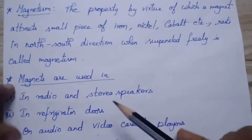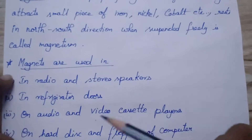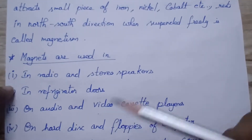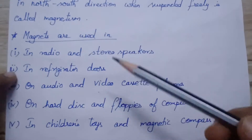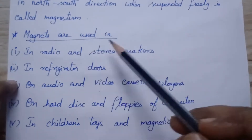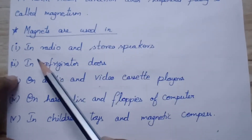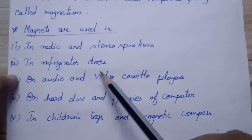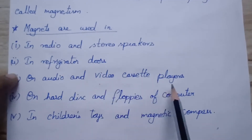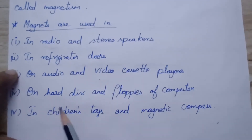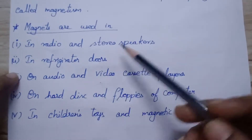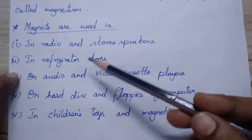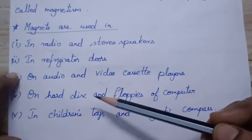What are the uses of magnetism? Why do we have to study about magnets and their properties? Because magnets are widely used in many areas — in radio and stereo speakers, refrigerator doors, audio and video cassette players, hard disk and floppy disk of computers, children's toys, and magnetic compass. In various fields, their purpose may differ.